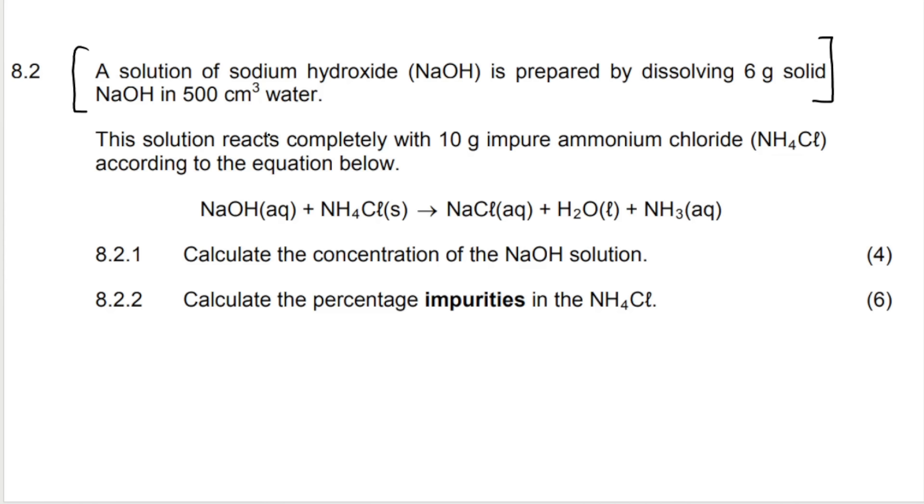So a standard solution is a solution when I know the concentration of the solution. They then say that this solution reacts completely with 10 grams of impure ammonium chloride. They give you the equation and 8.2.1, which is where we're going to be starting, asks me to calculate the concentration of the NaOH solution. Now generally when they ask us to do this, they might not even ask us to do this in a separate question. They could have combined this inside that question. You would have to know that I have to calculate the concentration because I'm given a mass and I'm given a volume.